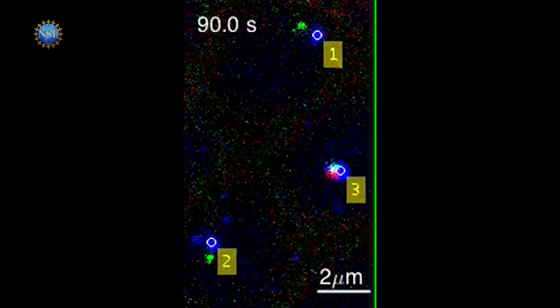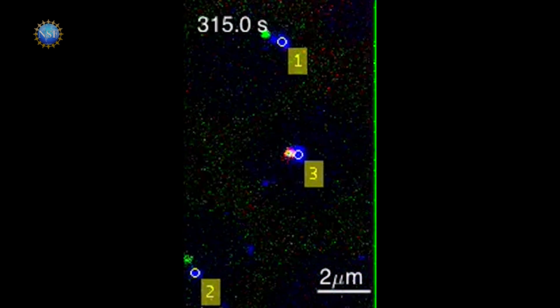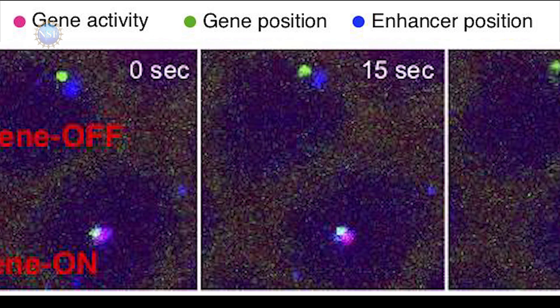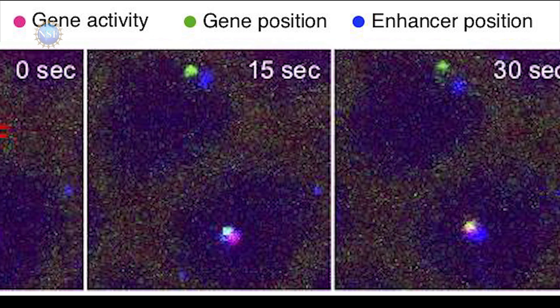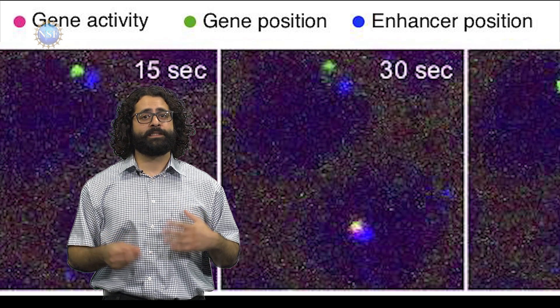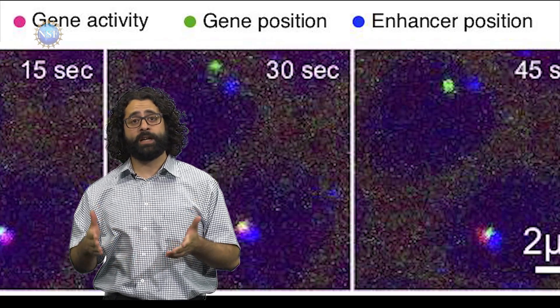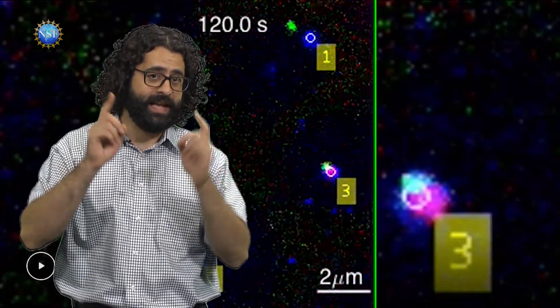Researchers have captured the moment in a living fly embryo to help understand the mechanism. Using fluorescent tags, the gene shows as green. Turns out when the enhancer, blue, makes physical contact, boom, red. Gene activity activated.